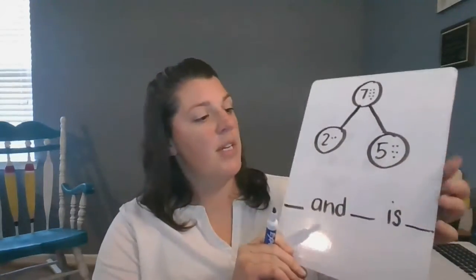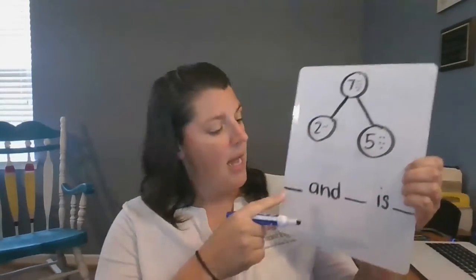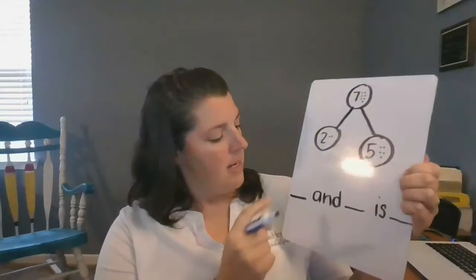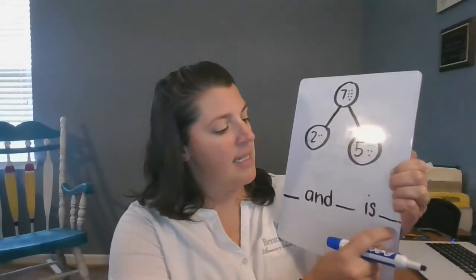All right, friends. Your job was to look at this number bond and fill in the blanks. Blank and blank is seven.